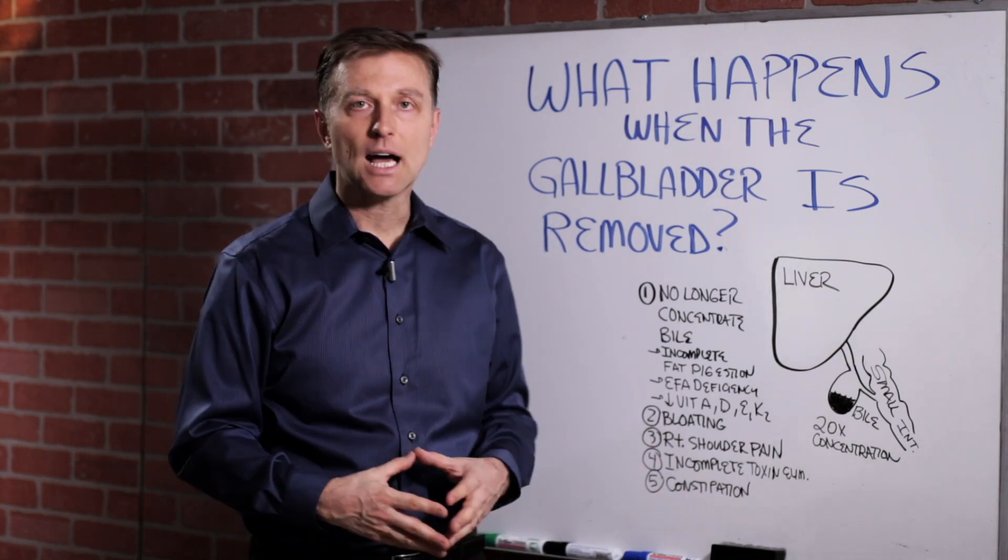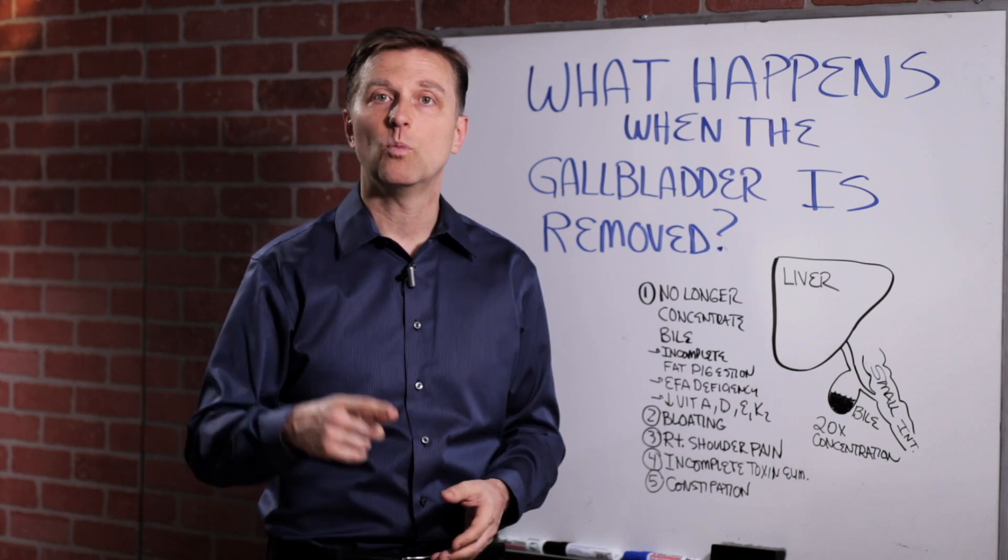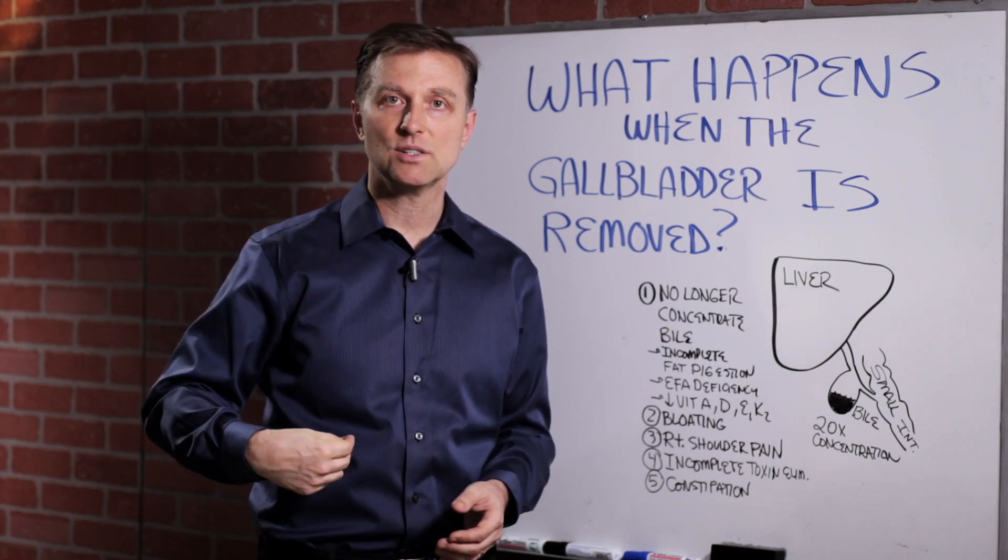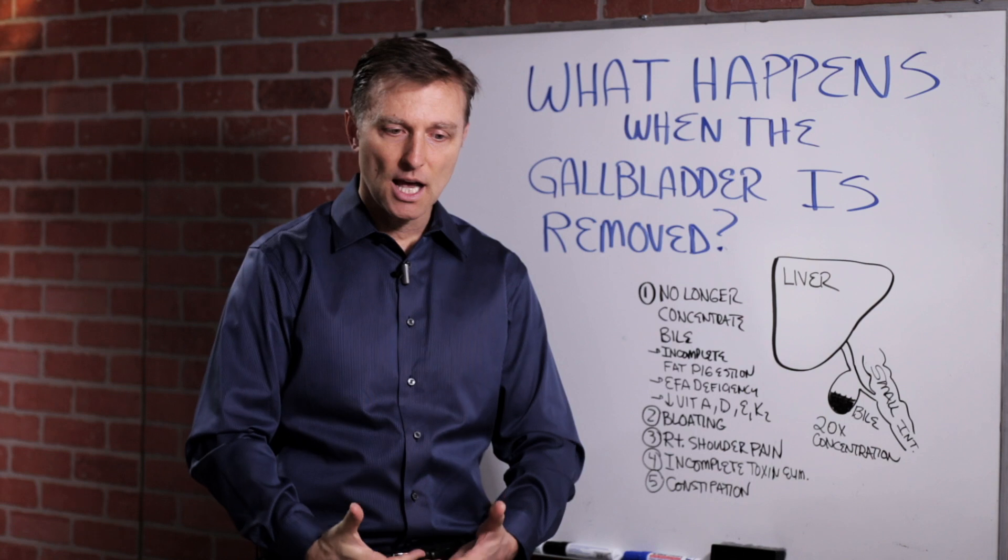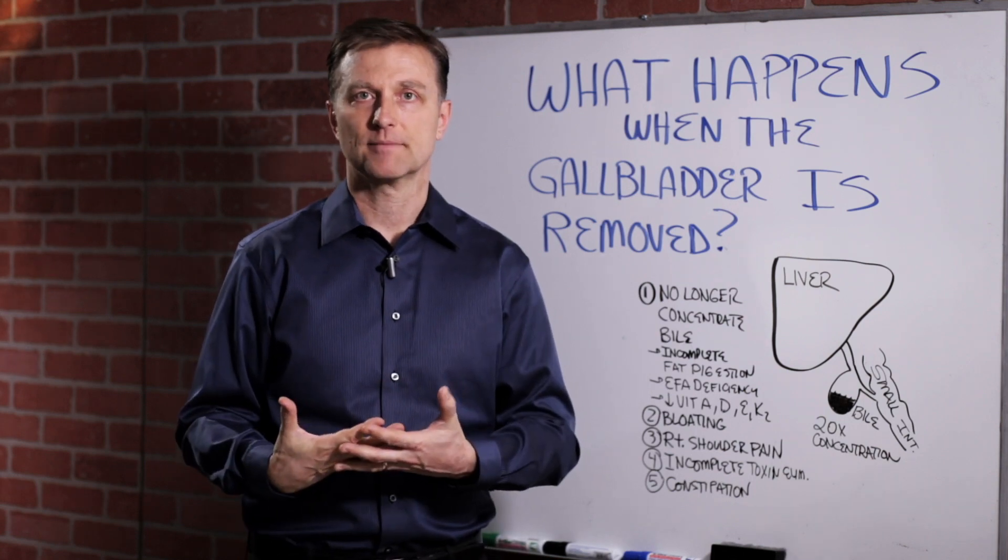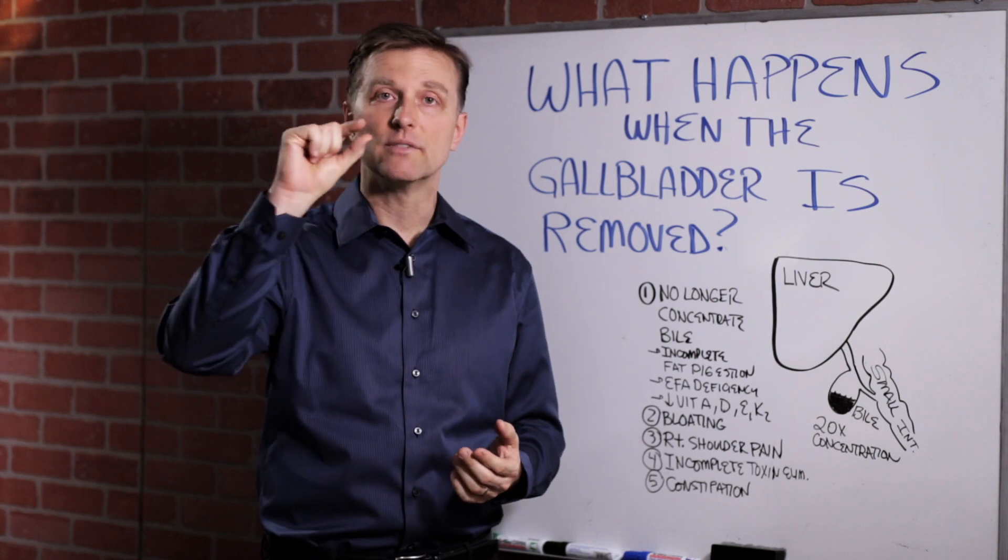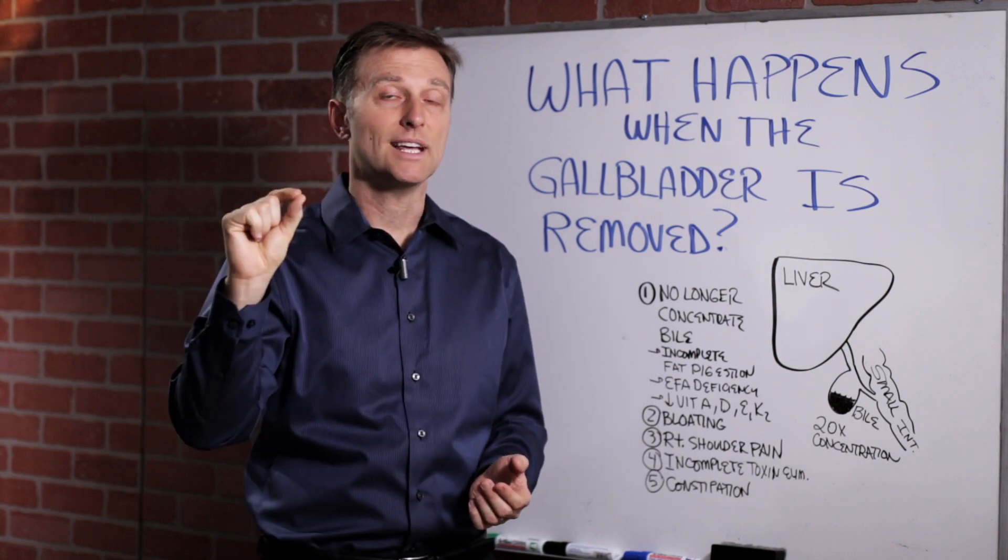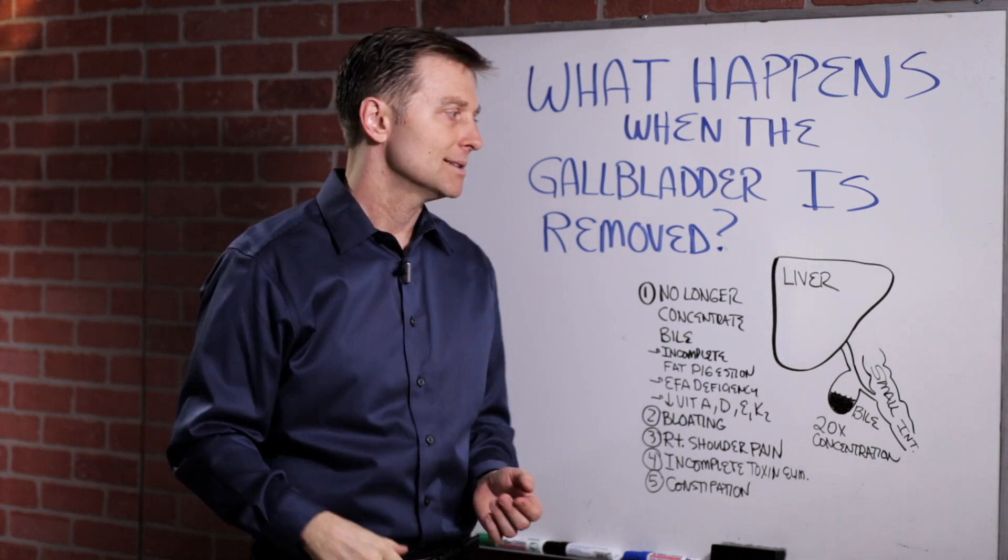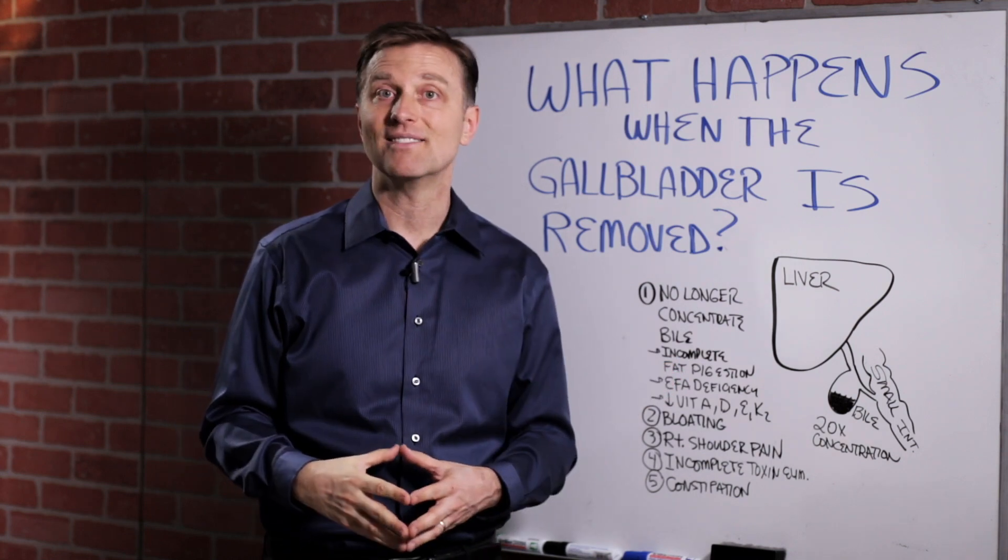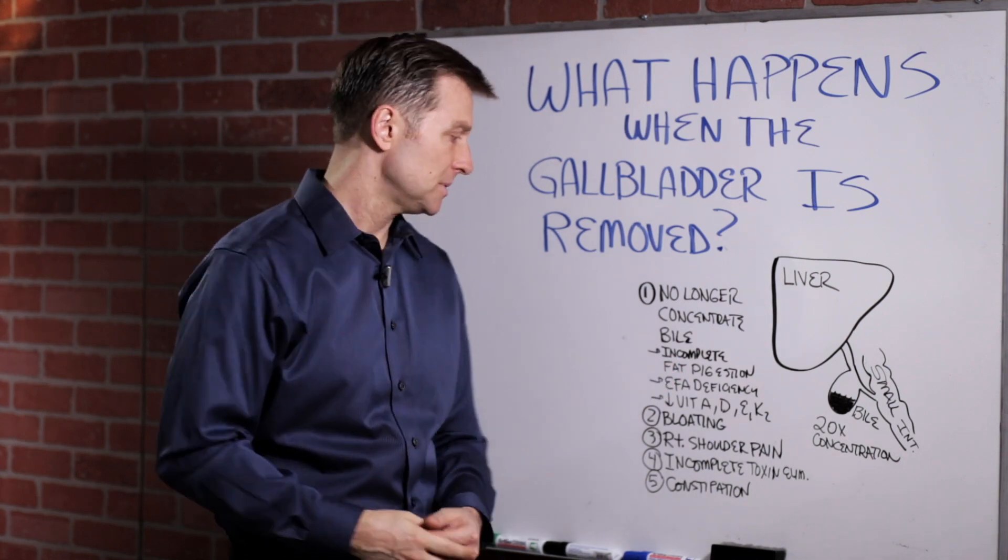So incomplete toxin elimination. One purpose of bile is to eliminate toxins. So you can't release that, so now we get a buildup of toxins. And I also forgot one other function. The gallbladder is essential for helping the conversion of T4 to T3 to help your thyroid work better. So without a gallbladder, you might start having hypothyroid symptoms.